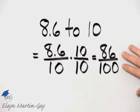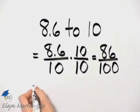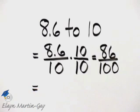Now notice this is still not in simplest form. 86 and 100, I know there's at least a common factor of 2.